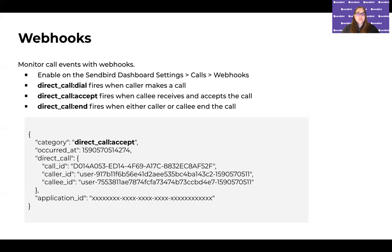We also have webhooks available on the backend side. You can enable these on the SendBird dashboard in the settings under the calls section. You can list the URL you want webhooks to be sent to and specify which webhook events you want. You can listen on the backend for dial events — which users are making calls, which calls were accepted — and see information like call ID, who the caller was, who the callee was, and the app ID if you have multiple applications. You can also see when a call ended with the direct call ended webhook event.